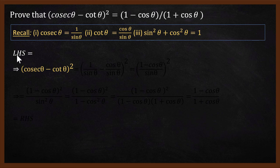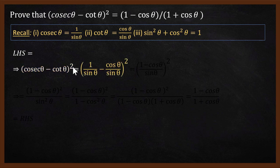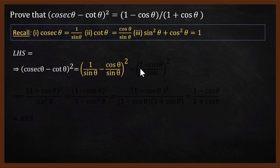Let us start with this problem. The left-hand side is cosecant theta minus cot theta, whole square. Substituting, cosecant theta becomes 1 by sin theta and cot theta becomes cos theta by sin theta, so we get 1 by sin theta minus cos theta by sin theta, whole square. Taking sin theta as the common denominator, we get 1 minus cos theta divided by sin theta, whole square.